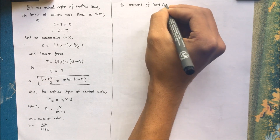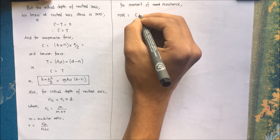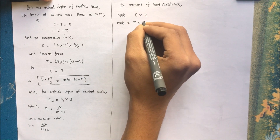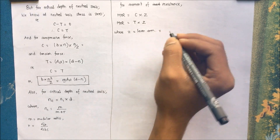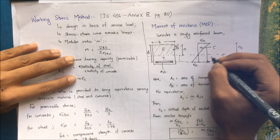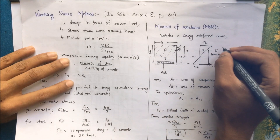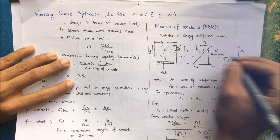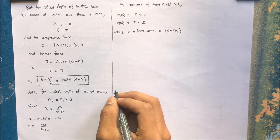For moment of resistance — the maximum bending moment a section can resist — MOR equals C times Z, and also equals T times Z, where C and T are the compression and tension forces and Z is the lever arm distance. For a triangular stress distribution, the centroidal distance from the base is N/3, therefore Z equals D minus N/3.